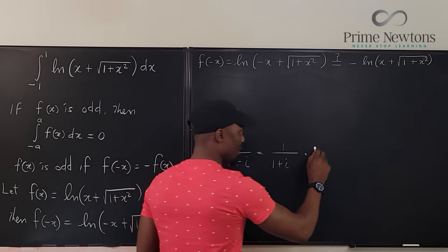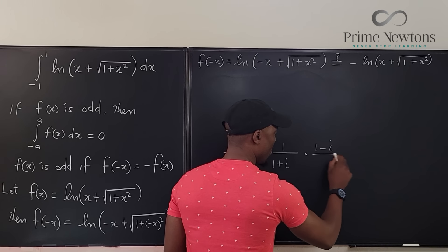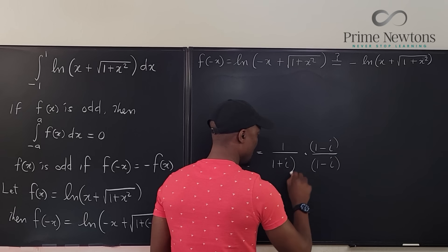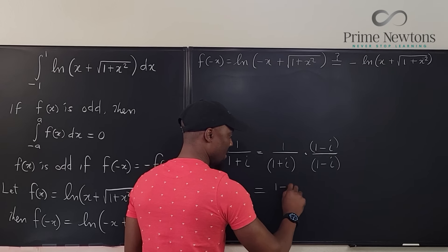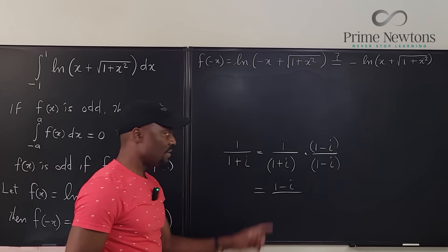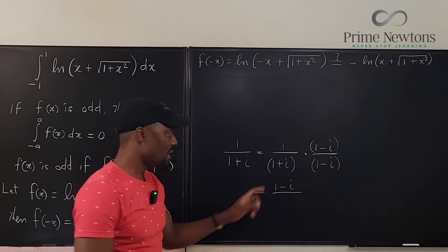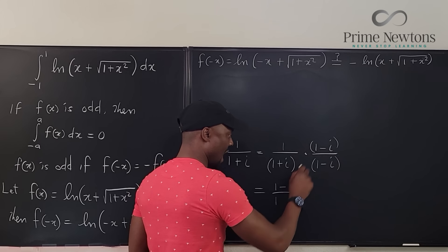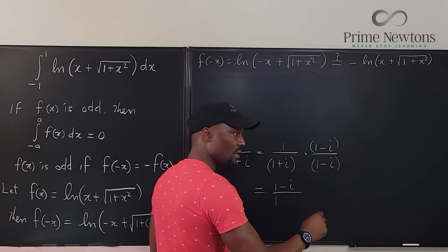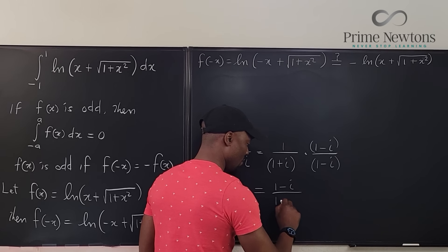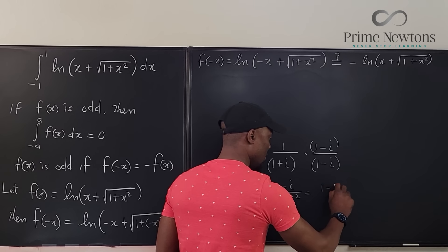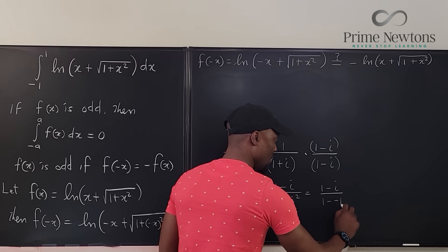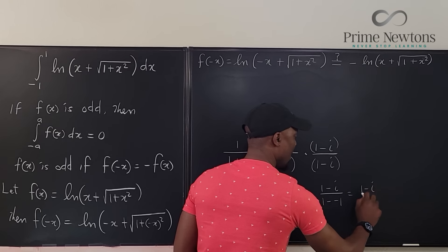If you multiply the top, you have 1 minus i. If you multiply the bottom, you're going to have 1 minus i squared, which is 1 minus minus 1, which is 1 minus i over 2. So you can clearly say the reciprocal of this complex number is half of its conjugate.